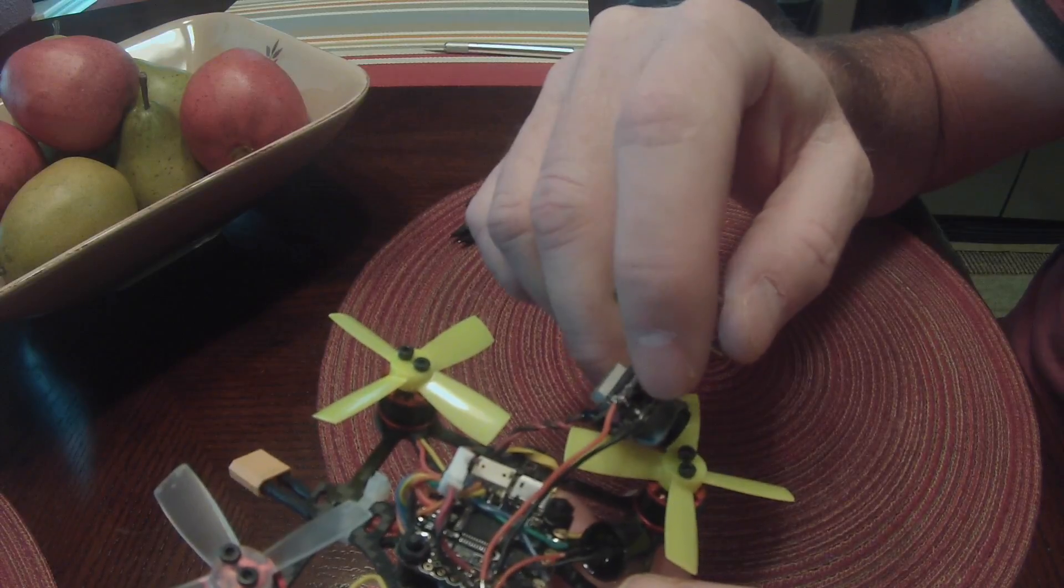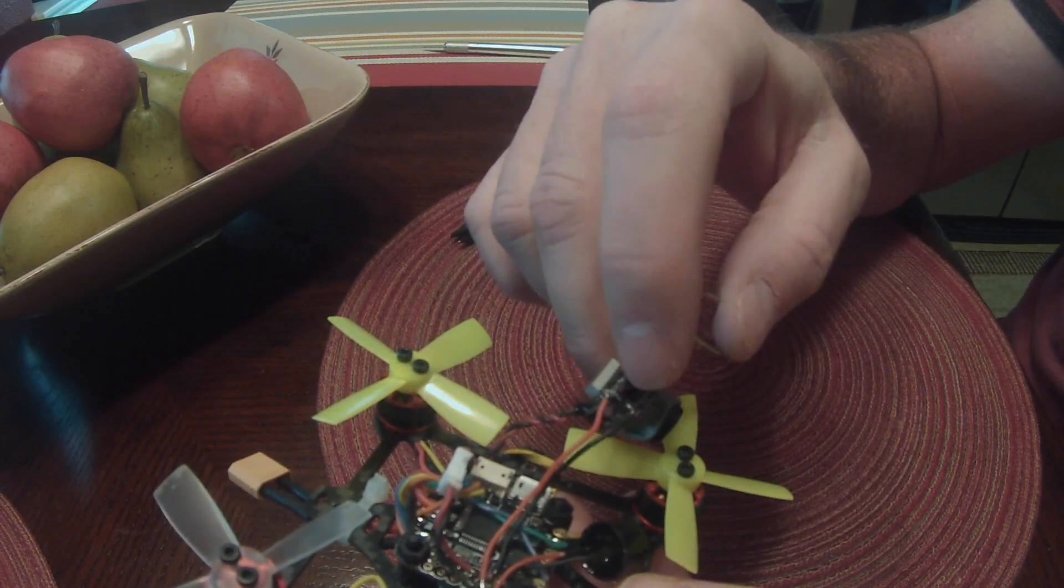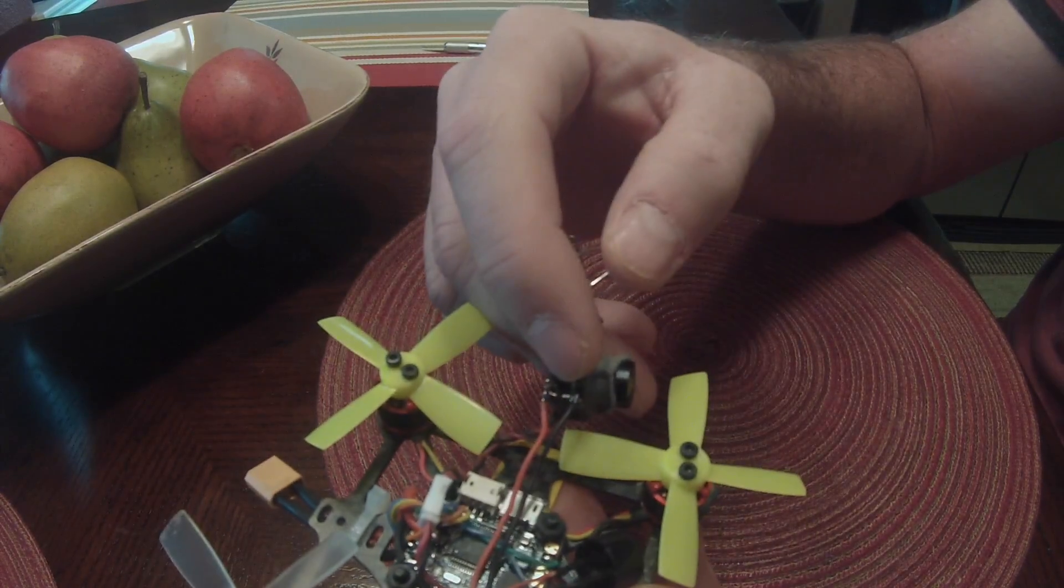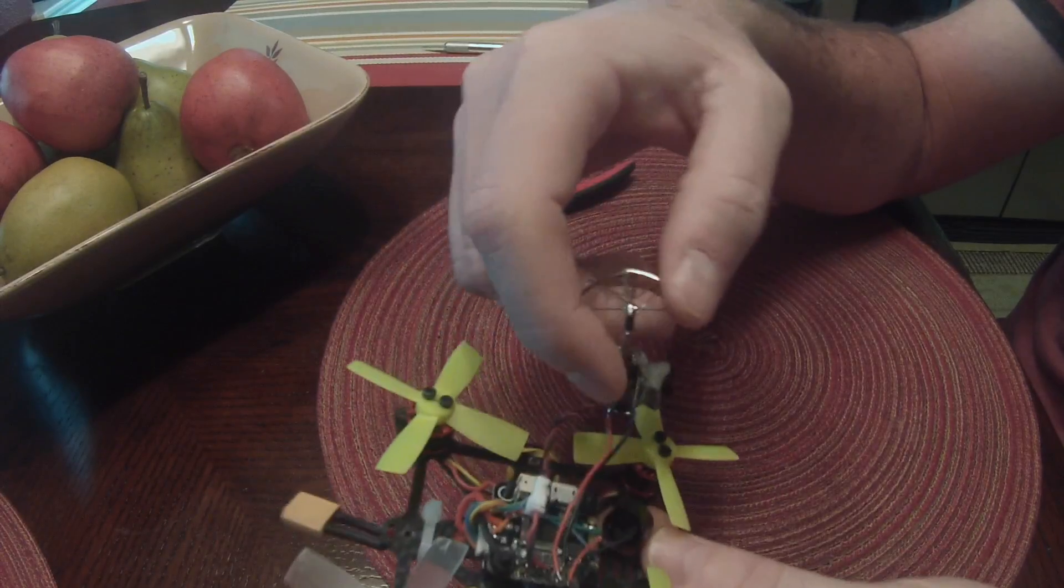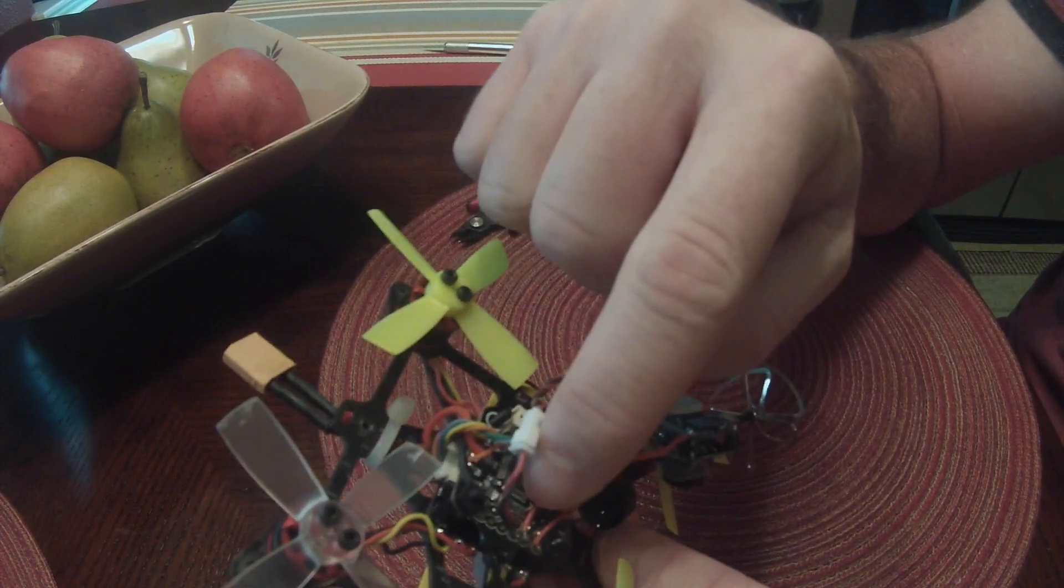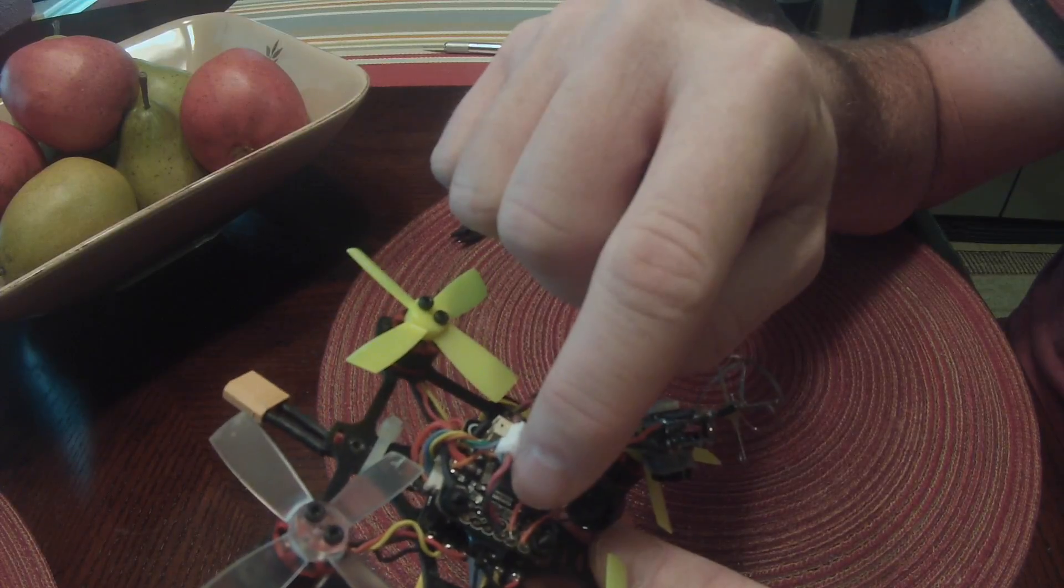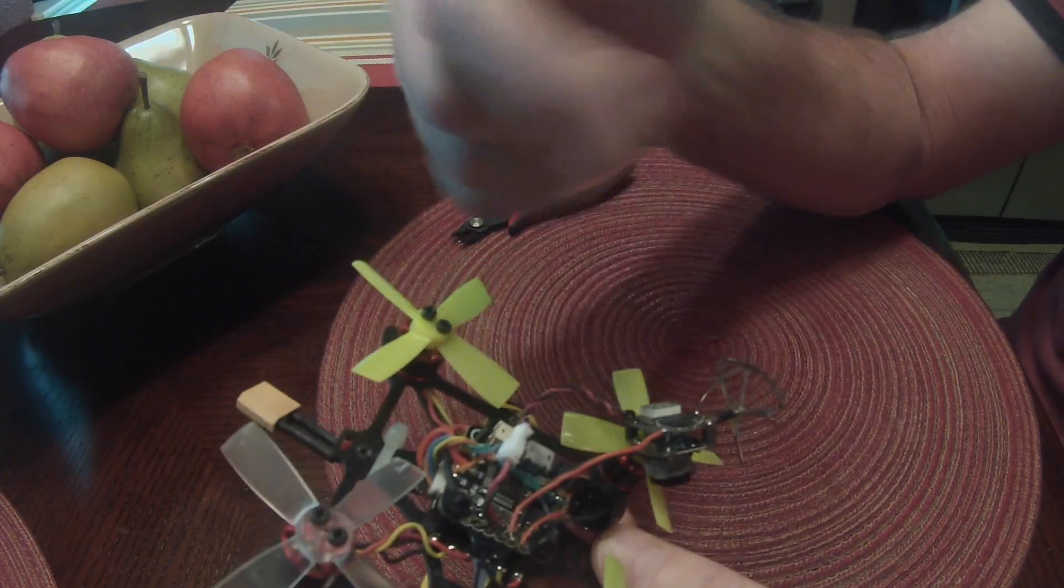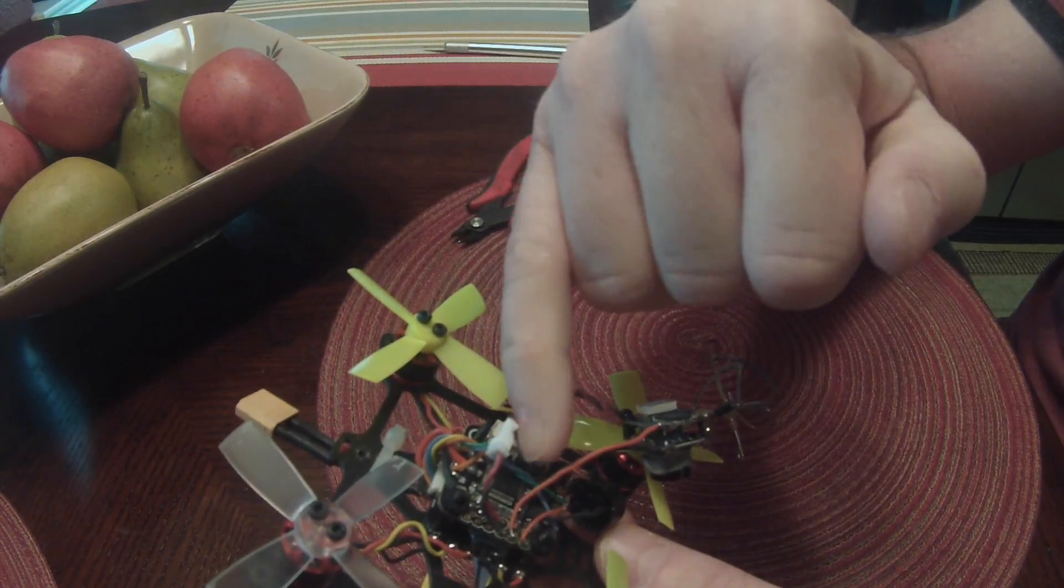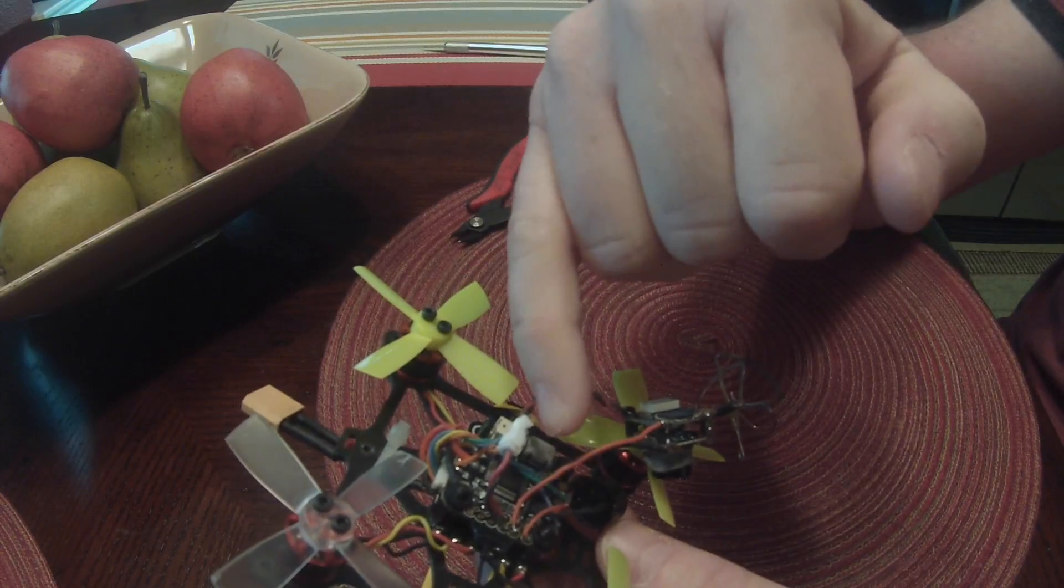and I soldered on the black one here which is going to be my video out from the camera and then they just go to their respective spots on the board video in is the one inside so that's the easy way to remember it's the one closest toward the inside of the board